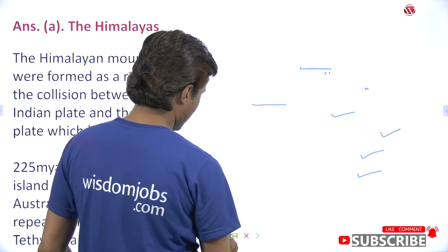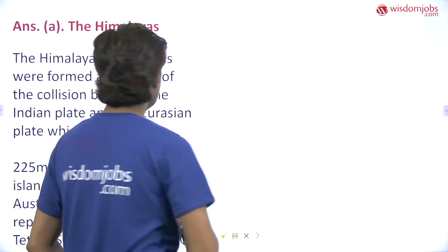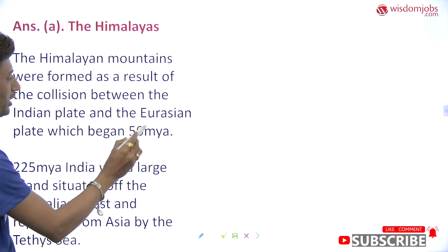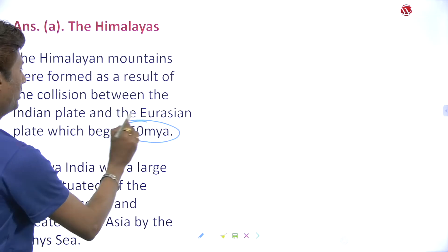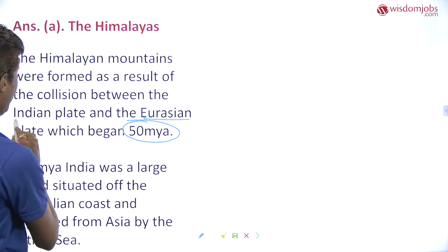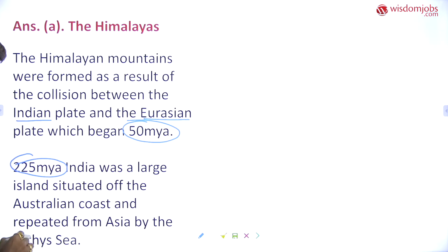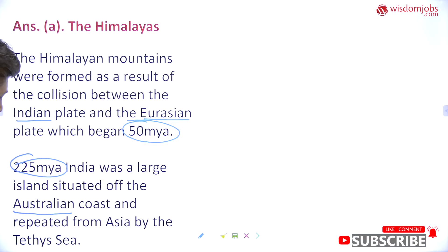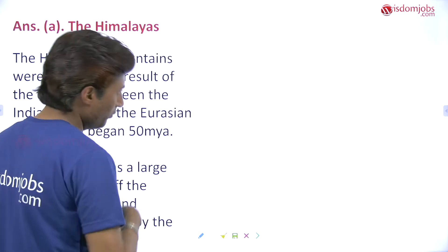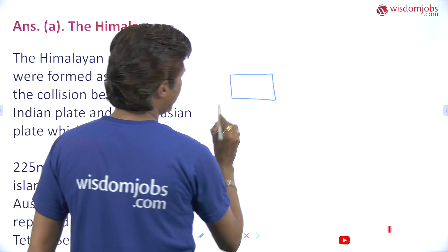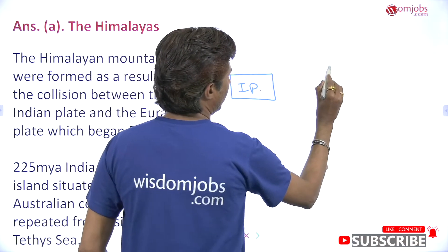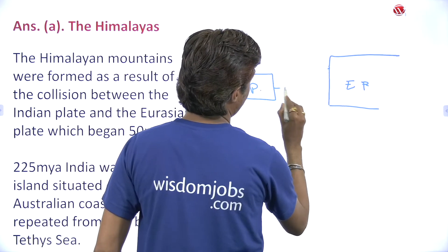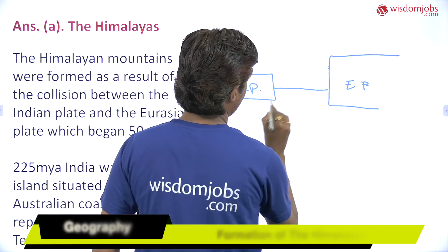The answer is Himalaya. The Himalayan mountains were formed as a result of the collision between the Indian plate and the Eurasian plate, which began 50 million years ago. 225 million years ago, India was a large island situated off the Australian coast and separated from Asia by the Tethys Sea. Here was the Indian plate, here was the Eurasian plate, and between them was the Tethys Sea.